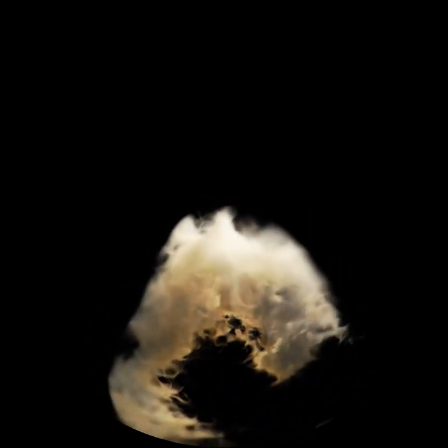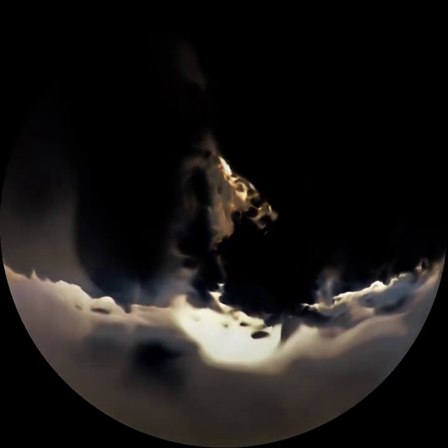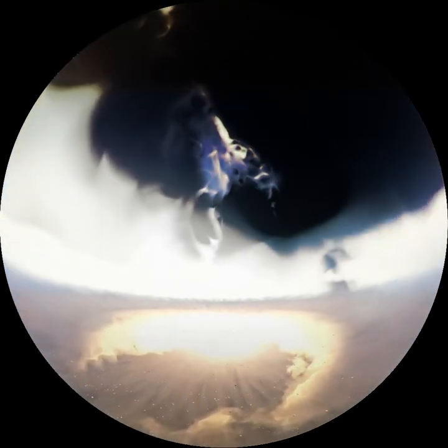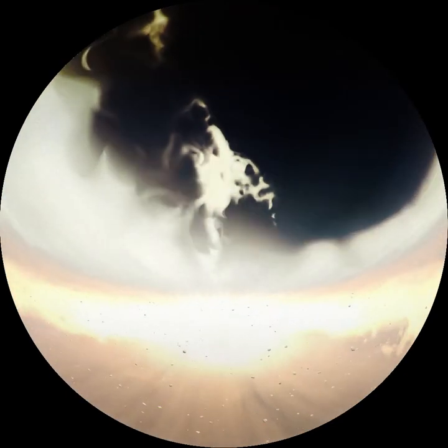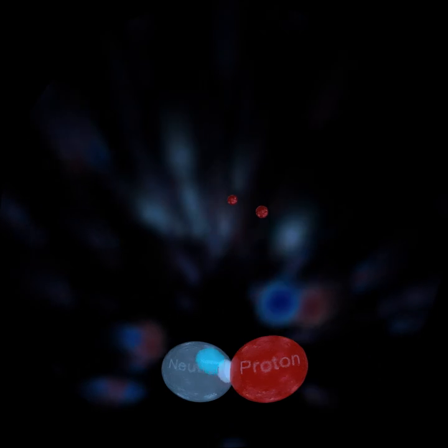Denser areas in these clouds continue contracting and form protostars with protoplanetary disks — the beginnings of new star systems. As gravity continues to collapse the balls of gases, the density and temperature increase in the protostar cores. These conditions strip the atoms of their electrons, allowing the protons to stick together when they collide, starting a process called fusion.